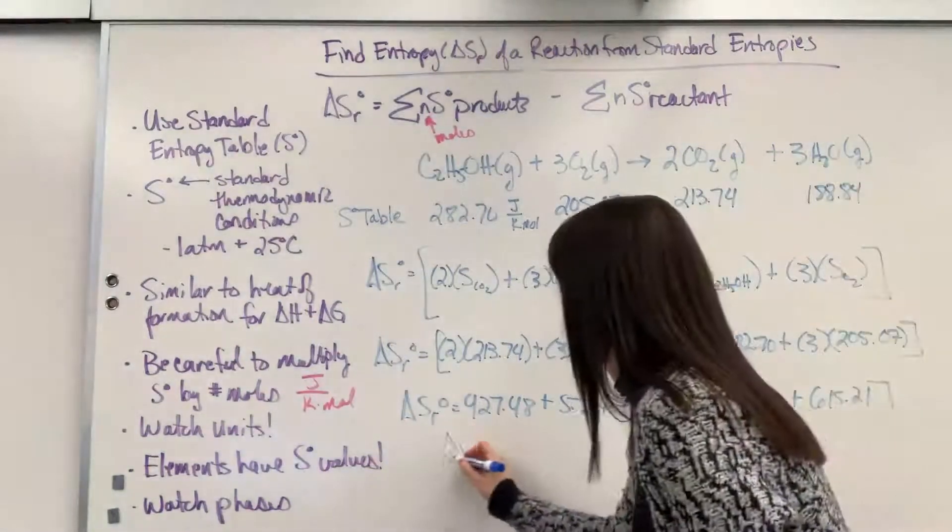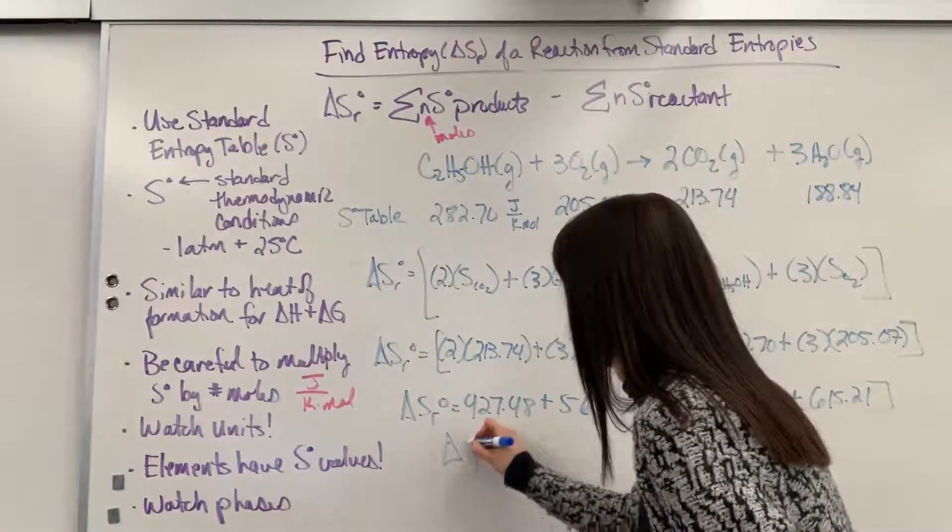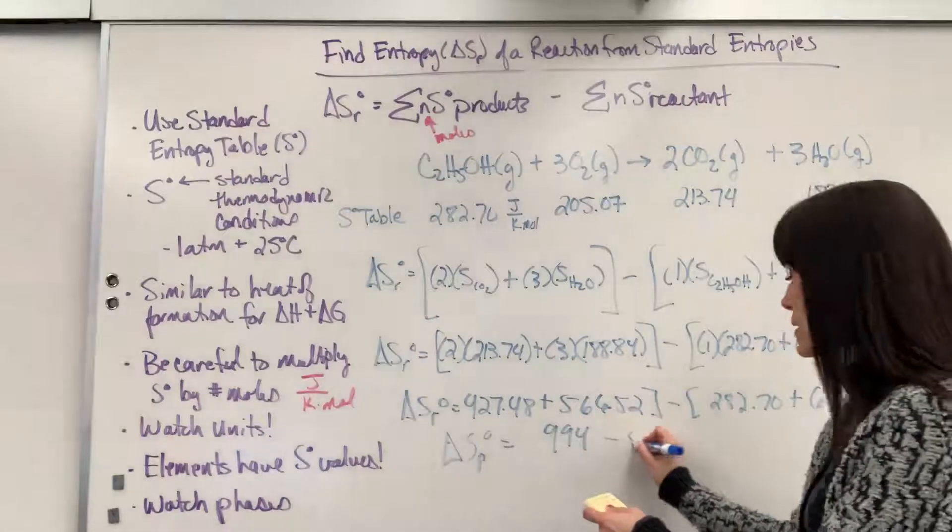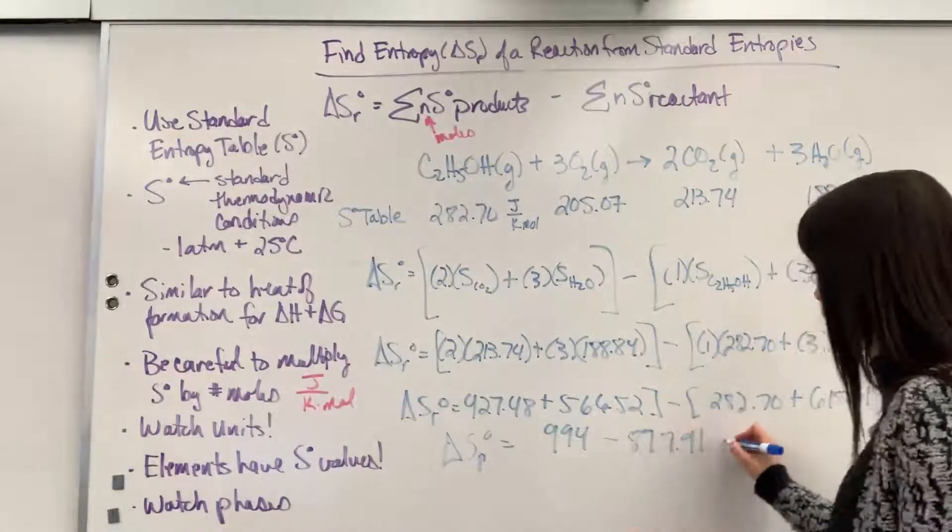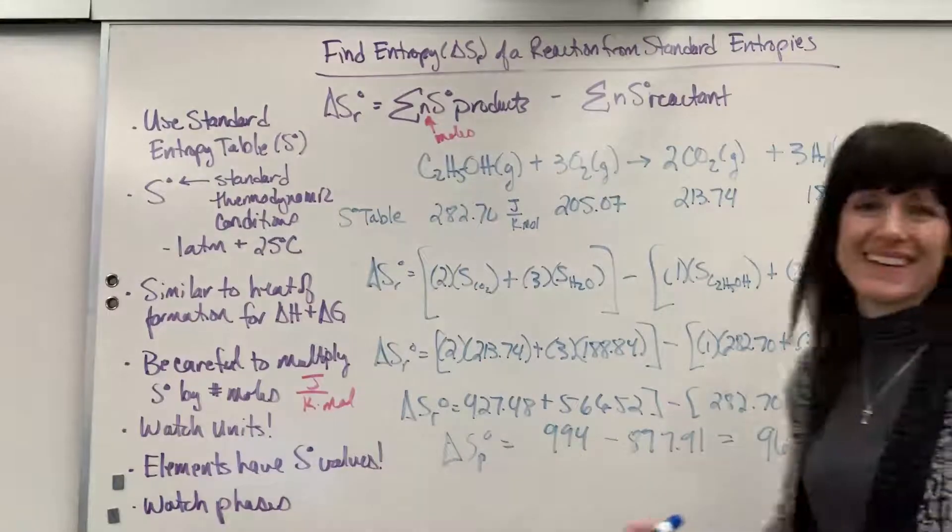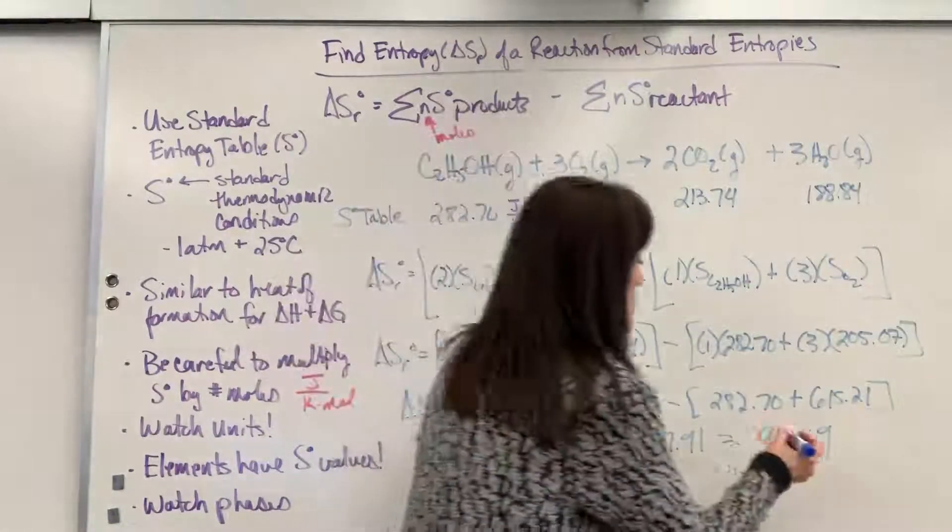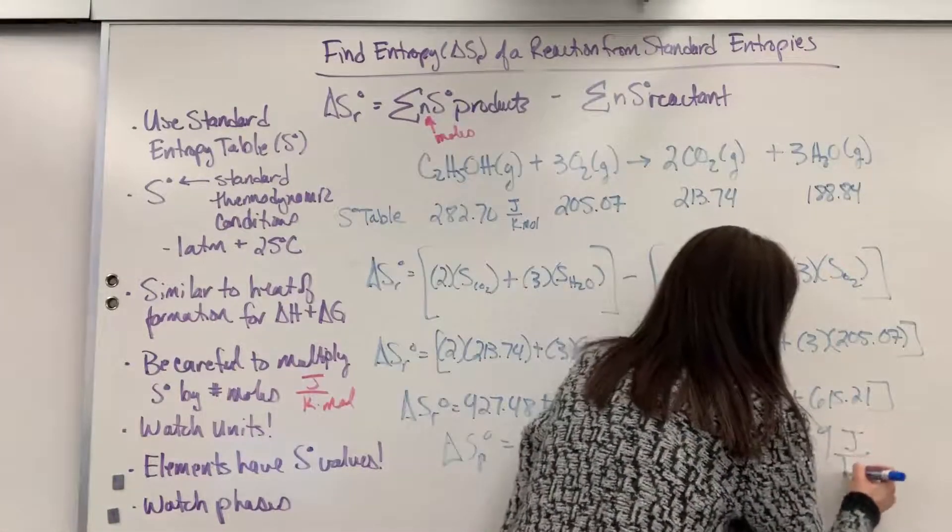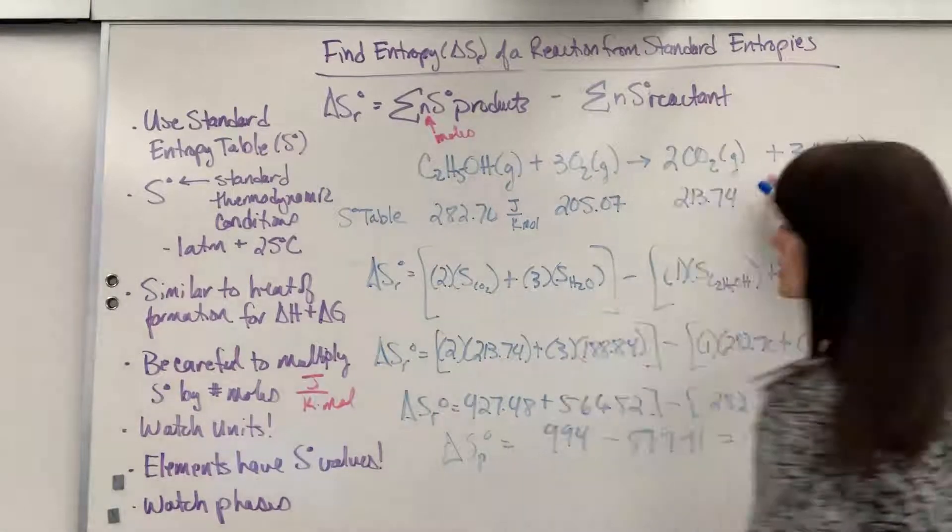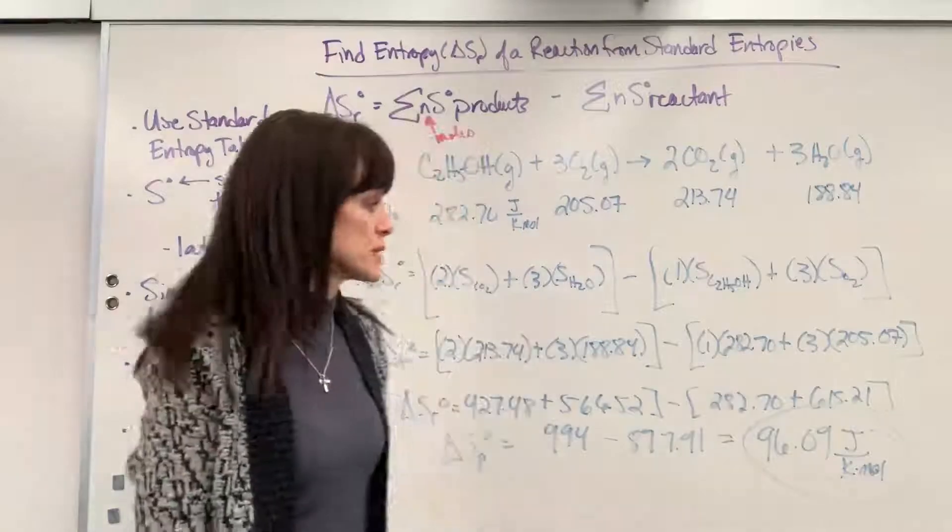Go ahead and do a little bit more math, and we'll end up with 994, minus 897.91, and that will equal, we got it, 96.09. That is our entropy. Now remember, the unit on that is joules per Kelvin times mole. So that's for this overall reaction right up there. It shows us the entropy.